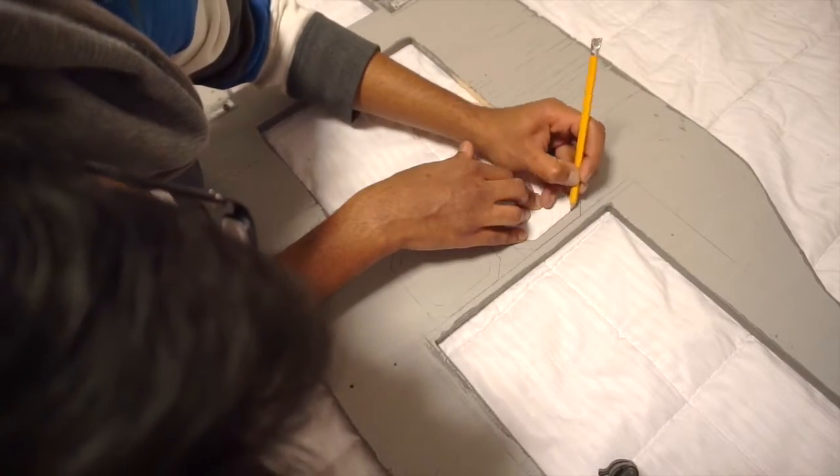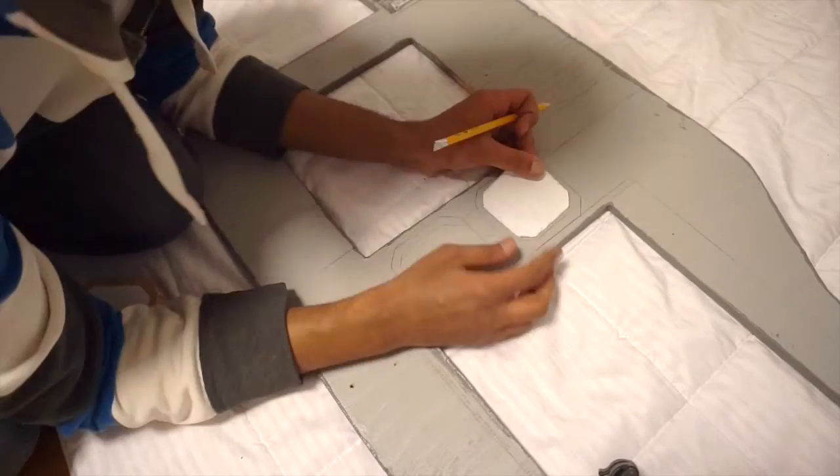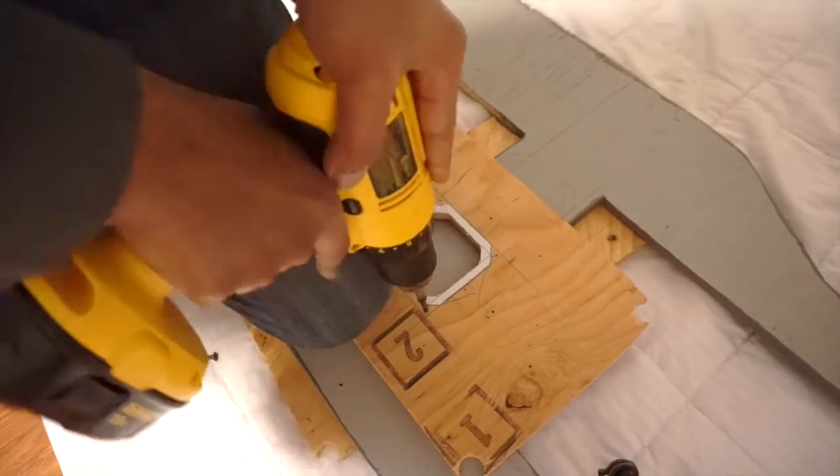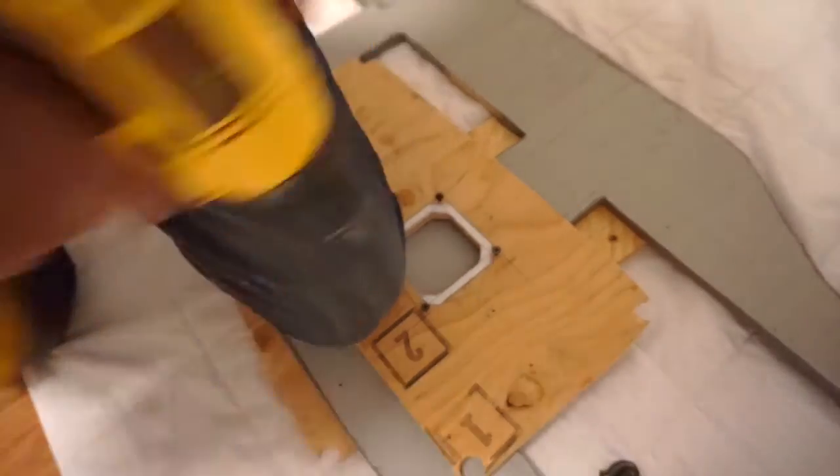So now we're going to go ahead and start cutting the holes out on our main instrument panel. The first thing I started doing in preparation to cut the holes was to trace out where I'm going to put the template on the main panel. And then I secured the template down with four screws. This is all being done on the back side of the main instrument panel.